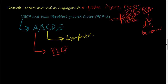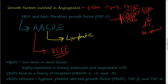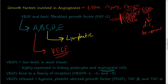These vascular endothelial growth factors are at low levels in most tissues — they're constantly being secreted. There's a high concentration in kidney podocytes and in muscle cells. These VEGFs bind to a family of receptors: VEGFR1, 2, and 3. What triggers their release includes hypoxia, platelet-derived growth factor (PDGF), transforming growth factor beta, and transforming growth factor alpha.